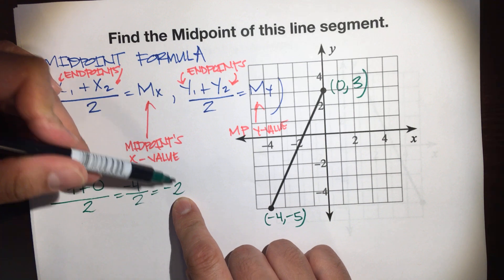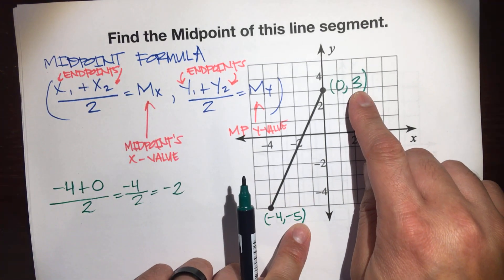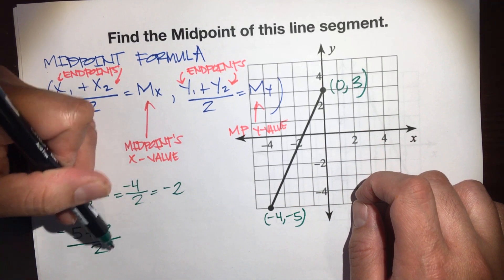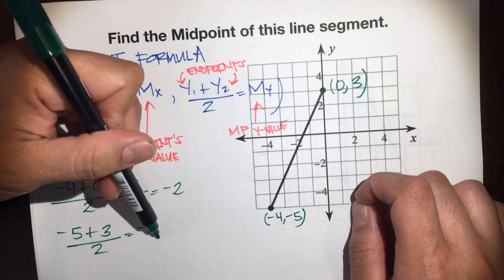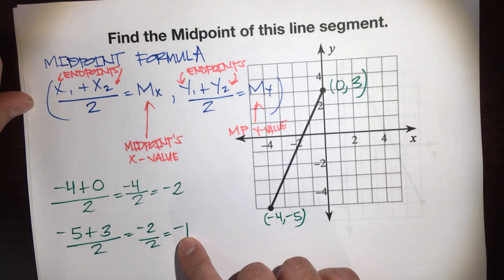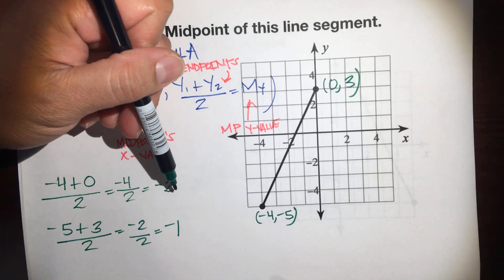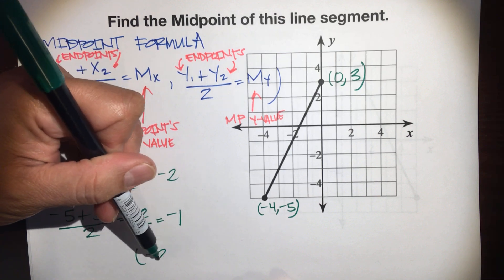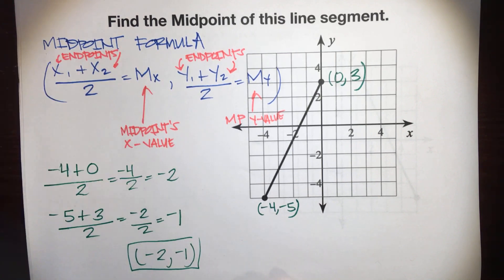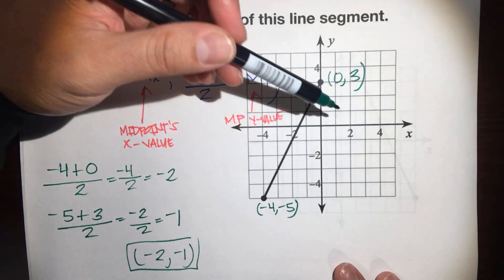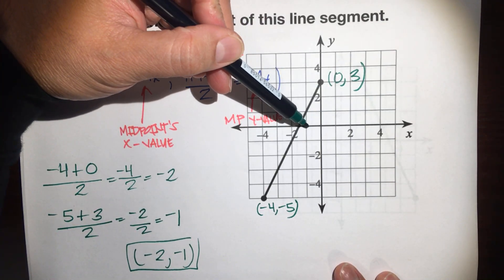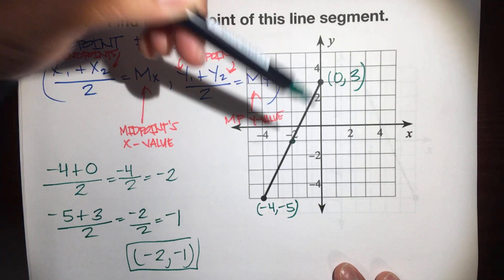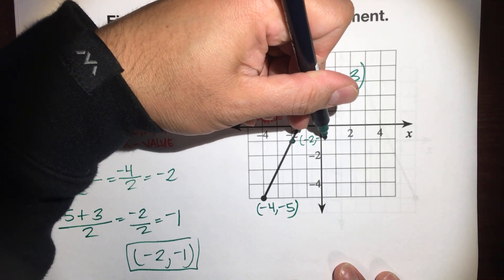That's the x value of our midpoint. Now we do the same with the y values: negative 5 plus 3 over 2, which is negative 2 over 2, which is negative 1. That's the y value of the midpoint. So our final answer, written as an ordered pair, is negative 2, negative 1. Let's check — does it land on this line? Negative 2, then down 1 — yes, it lands on there.